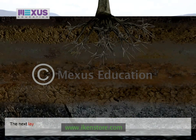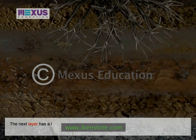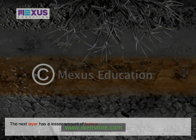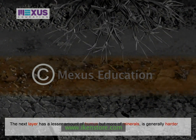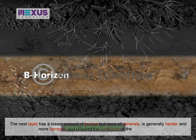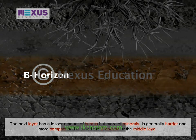The next layer has a lesser amount of humus but more minerals. This layer is generally harder and more compact and is called the B-horizon or the middle layer.